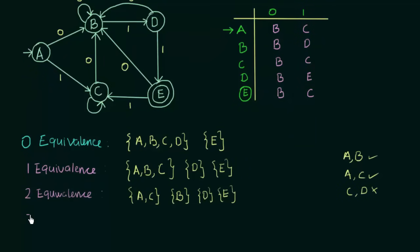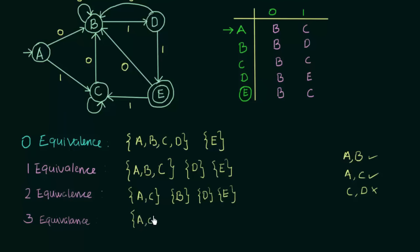Now for three equivalence, we use the two equivalence row. We only need to check A and C since B, D, and E are already separate sets. A on input 0 goes to B, C on input 0 also goes to B — same state. On input 1, A goes to C and C also goes to C — same state. So A and C are three equivalent. The three equivalence row gives {A, C}, {B}, {D}, {E}.